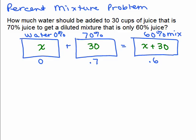Now, what we want to make sure is that we have the same amount of pure juice in these two containers as in the final container. Now, the interesting thing is here, you're adding water, so you're not going to get any juice out of this container at all. If you want to write that as an equation, 0 times X is going to be 0.